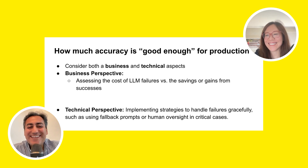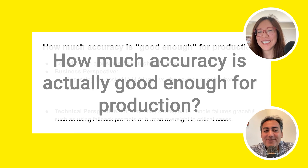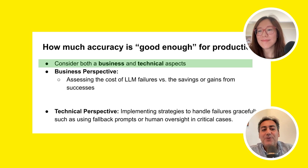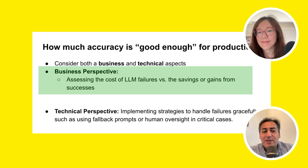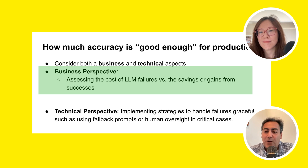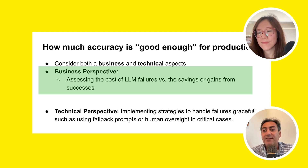The million-dollar question: how much accuracy is actually good enough for production? The answer is, it depends. We have to look at each use case, but a general rule of thumb is to look from two perspectives: business and technical. From a business perspective, you need to evaluate the cost of LLM failures versus the savings or gains from a successful approach. There's a good customer support example that breaks down savings, costs, and everything. What if the failures are so critical that you can't make up for them? That's something you have to reconsider.